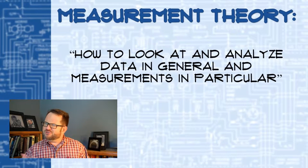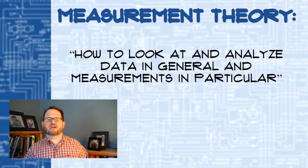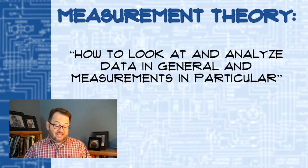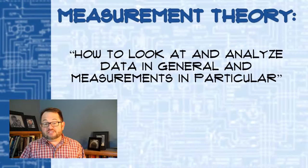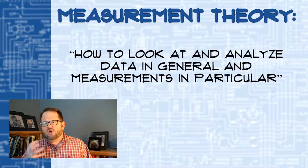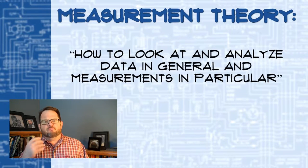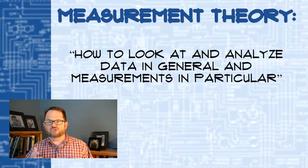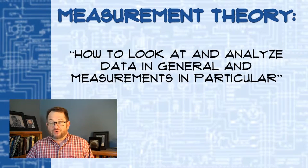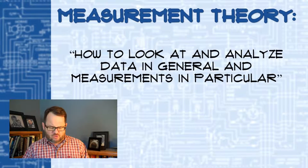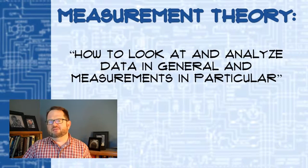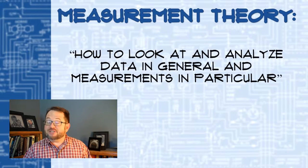Your textbook just sort of throws out a glib definition of measurement theory, and it's fine with me. It just says it's how to look at and analyze data in general and measurements in particular — in other words, how to get a sense of what they're meaning, what does the measurement actually tell you about what's really going on? A measurement is always just an estimate of what's really going on. What can we glean from these measurements?